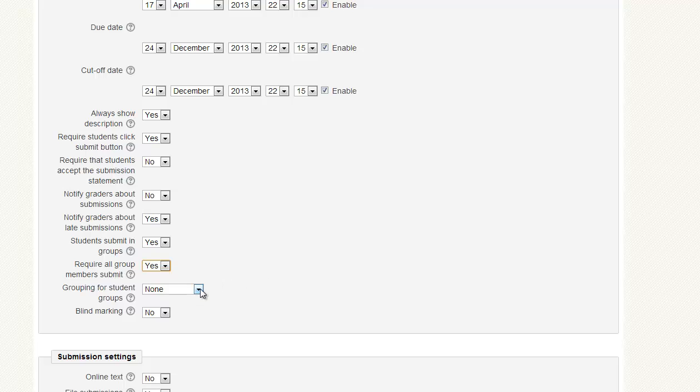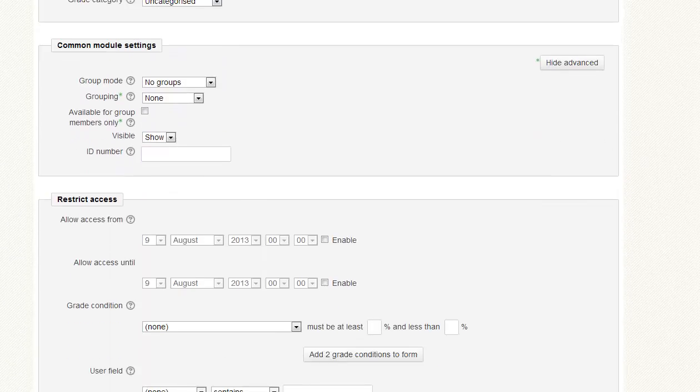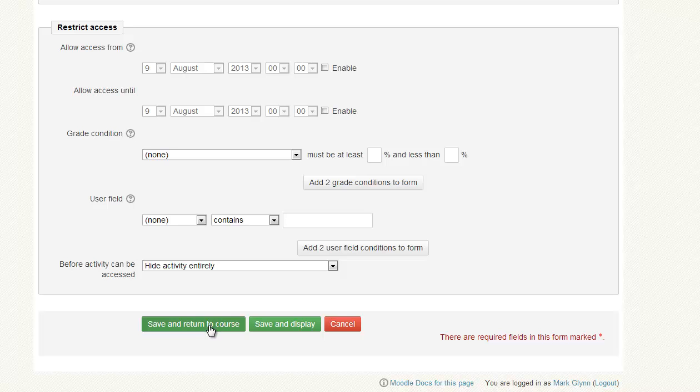The grouping for the student is the key one. What groups are we going to use? We're going to do it for assignment 1. And then we scroll down and click Save Changes.